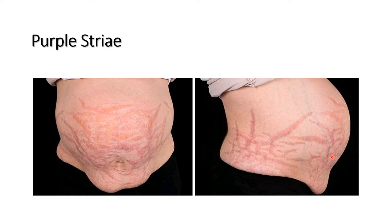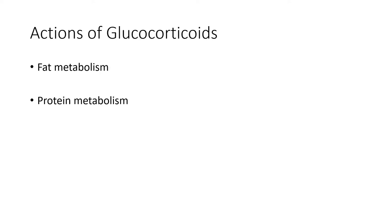Purple striae is seen in people who have Cushing's syndrome. To know the reason why this happens, you have to find out the actions of the hormone found in excess in this syndrome. Cortisol is found in excess in Cushing's syndrome, and if you know the actions of cortisol, you can understand why purple stretch marks occur. You need to know the actions of glucocorticoids on fat and protein metabolism.